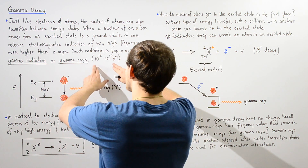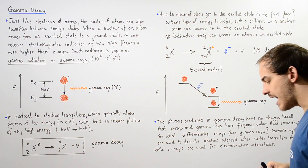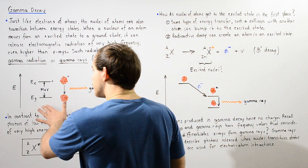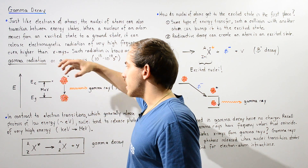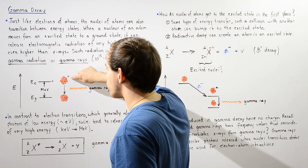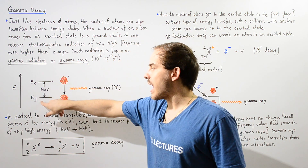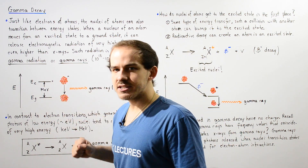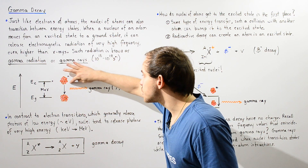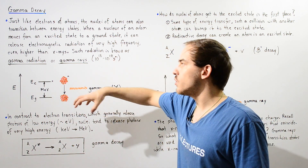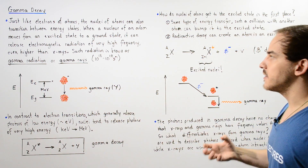Their frequency values range from about 10 to the 18 to 10 to the 19 hertz, and sometimes even higher. Looking at the following diagram, we have the nucleus of an atom in a higher energy state — the asterisk symbolizes the excited state. When the nucleus transitions back to the lower energy ground state, it releases energy that is usually very high, because gamma radiation has very, very high frequencies.